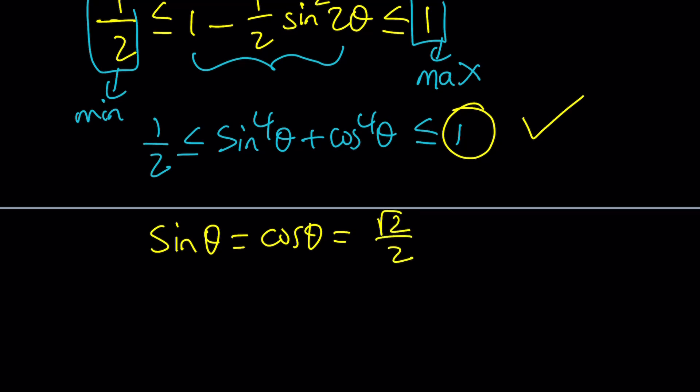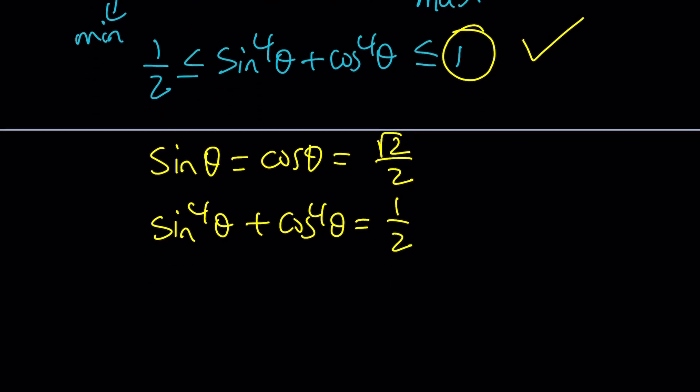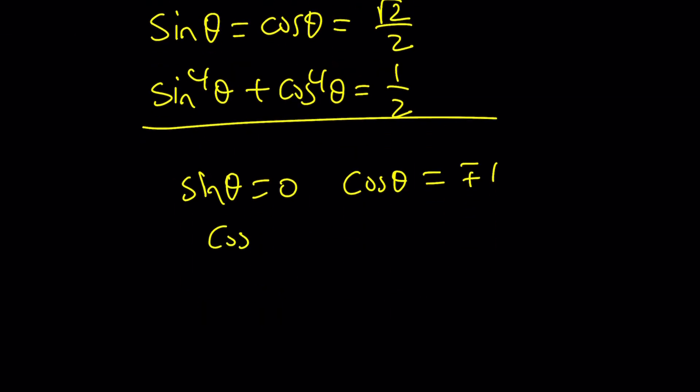So I kind of checked it out. What happens if sine and cosine are the same? Then they're both going to equal √2/2, because the sum of their squares is 1. And when you do the fourth powers, in this case, you don't get the maximum value. You get ½, the minimum value. How do you get the maximum? Well, you get the maximum if sinθ = 0 and cosθ = ±1, or the other way around. That's basically when you get the sum of the fourth powers.